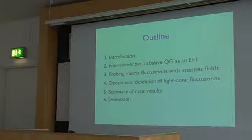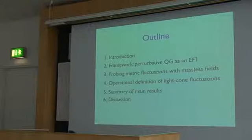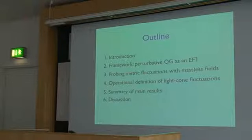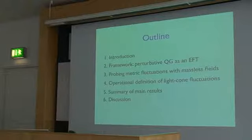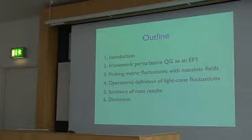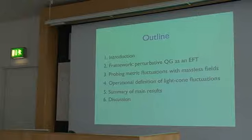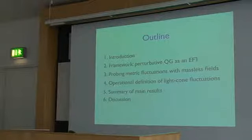The outline of the talk is the following. After the introduction, I will describe briefly the framework I will be using, namely perturbative quantum gravity as an effective field theory. Then I will tell you how to probe metric fluctuations by looking at the effect they have on the propagation of massless fields. In particular, I will focus on light-cone fluctuations and try to define an operational definition of light-cone fluctuations in terms of a gauge-invariant observable. Then I will conclude by summarizing the main points and discussing some further aspects.